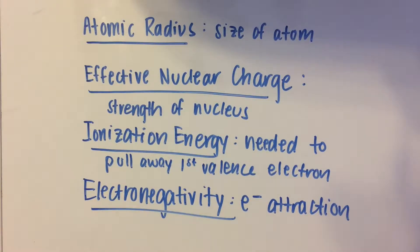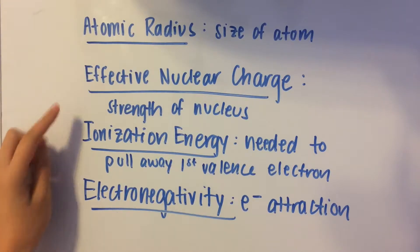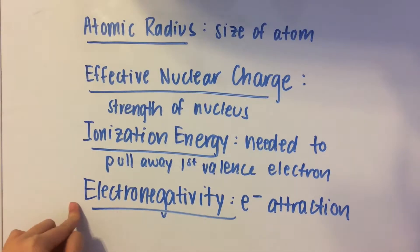Hey guys, so today I'm going to be talking about four periodic trends, and these are atomic radius, effective nuclear charge, ionization energy, and electronegativity.